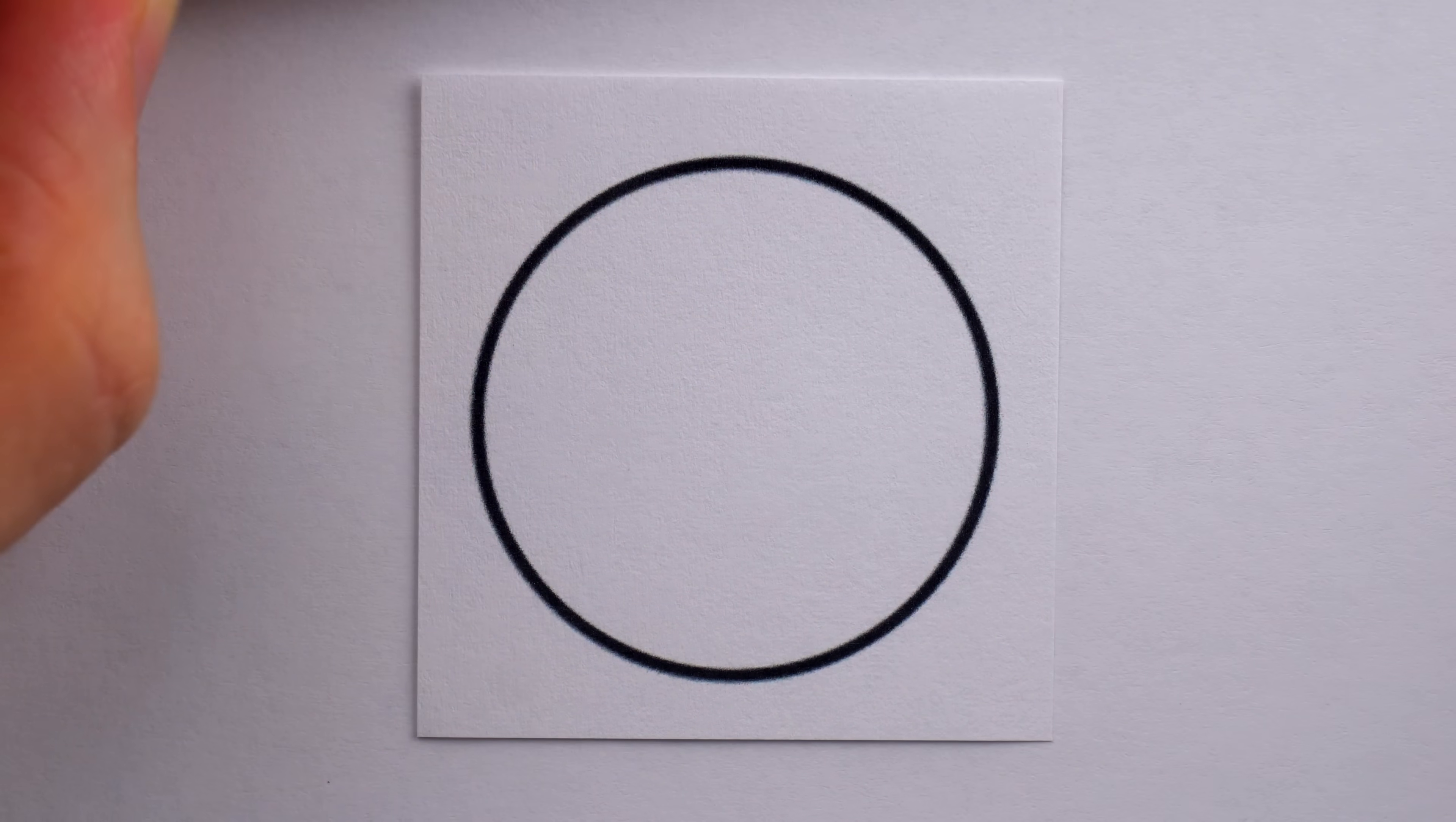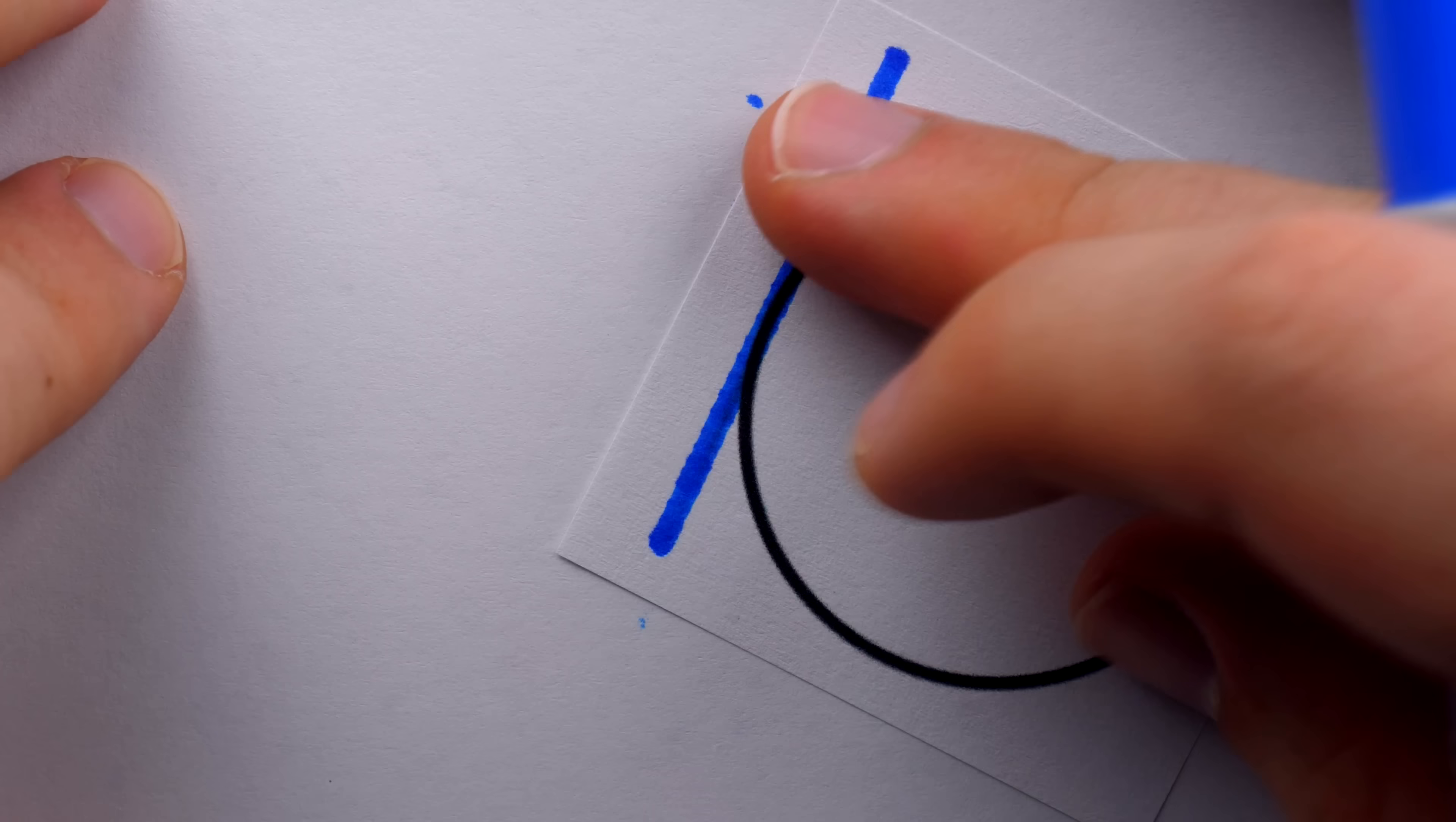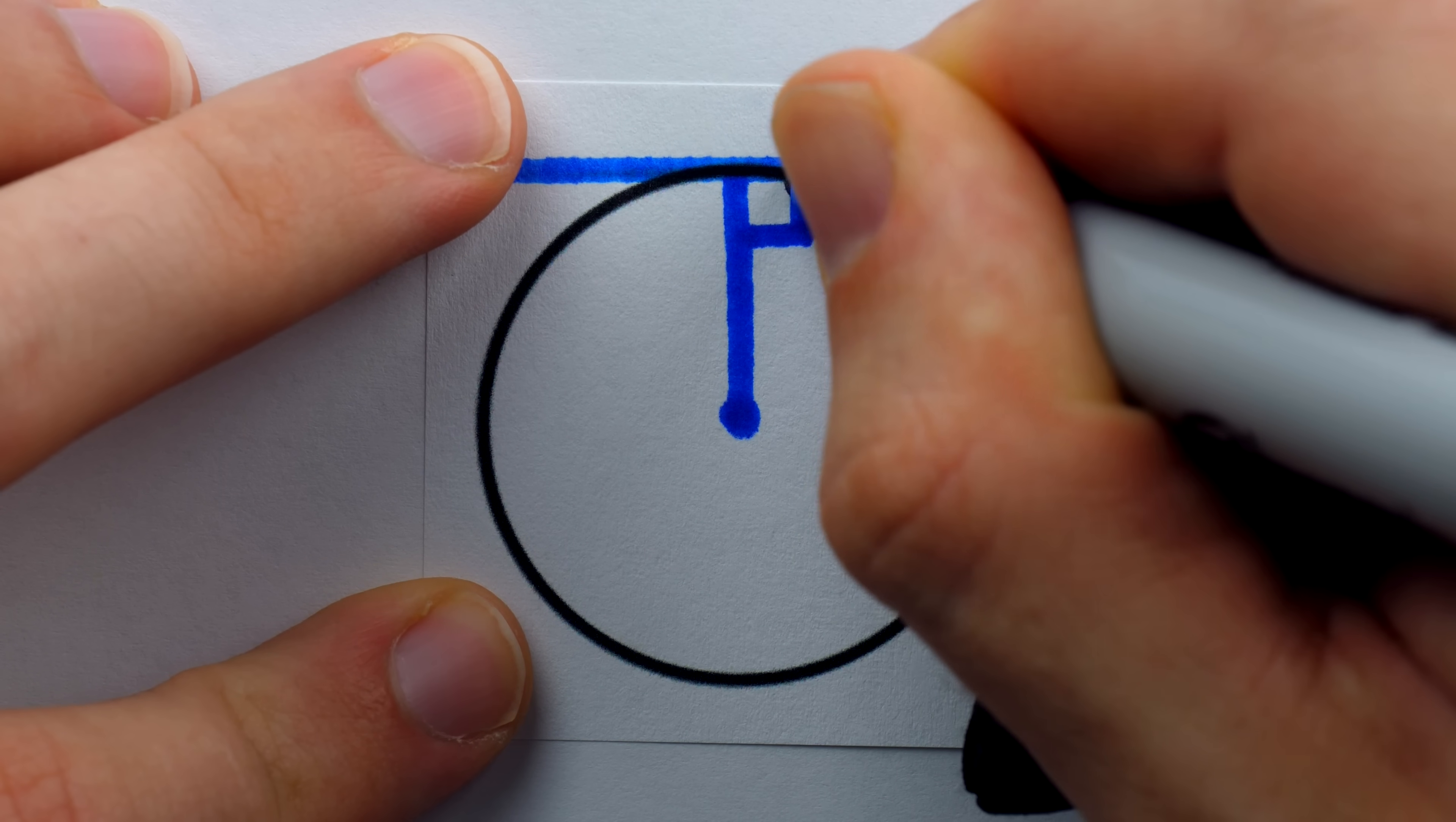You may recall this classic simple theorem from geometry, that if a line is tangent to a circle, then the radius of the circle that touches that point of tangency is actually perpendicular to the tangent line.